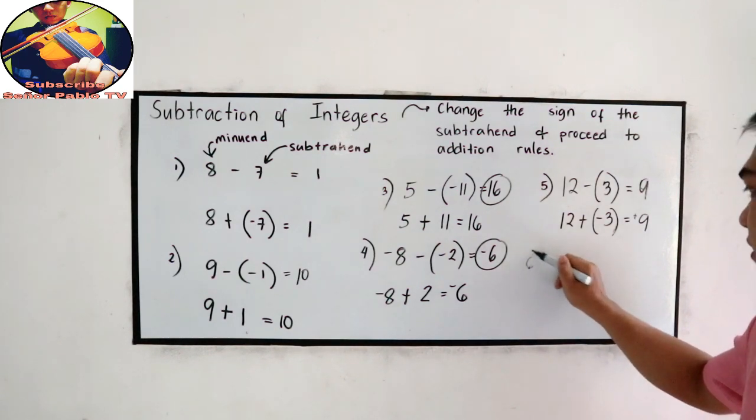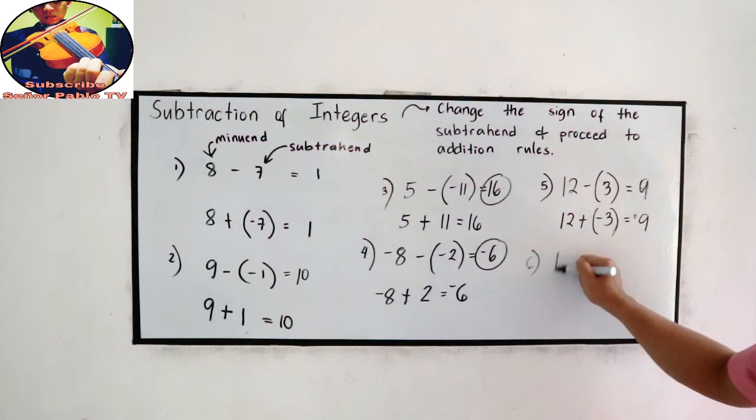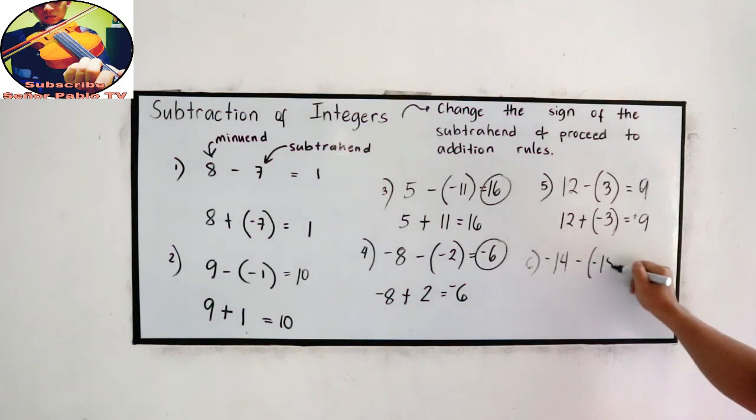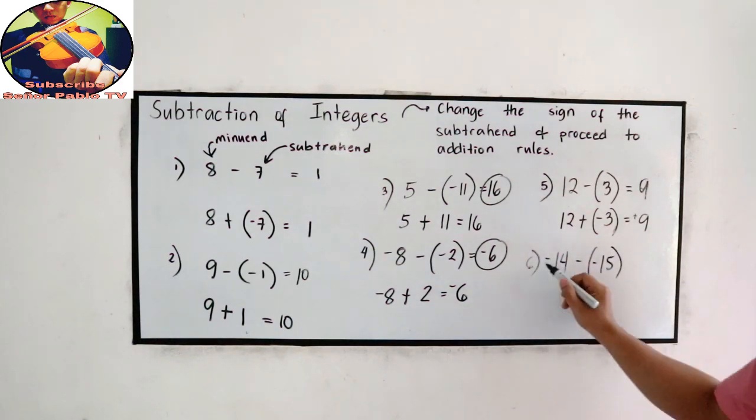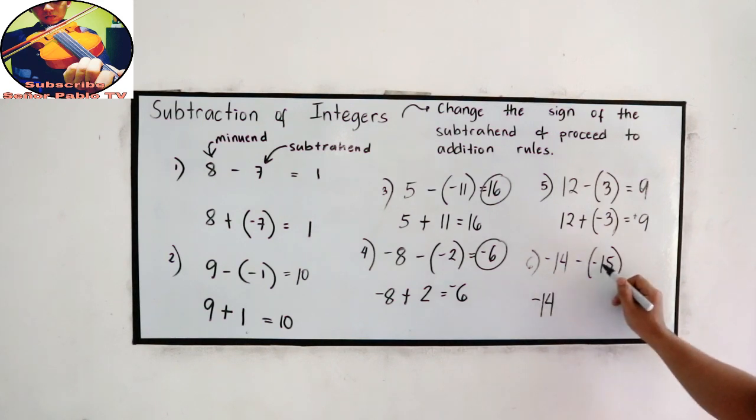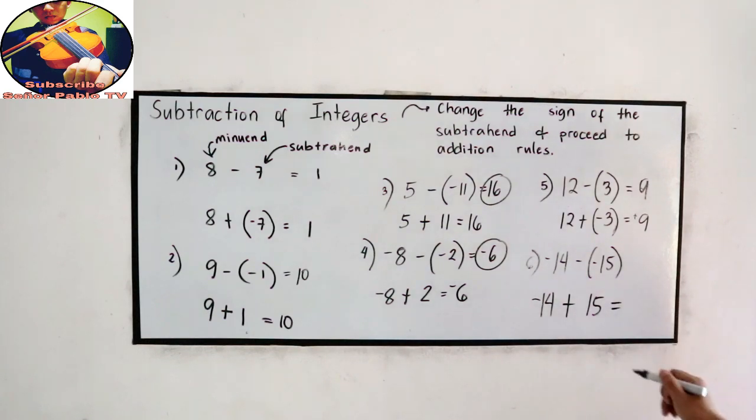Number 6. Negative 14 minus negative 15. So negative 14, change the sign, that will become positive 15. Then proceed to addition. So 1 negative and 1 positive, that is 15 minus 14, positive 1.